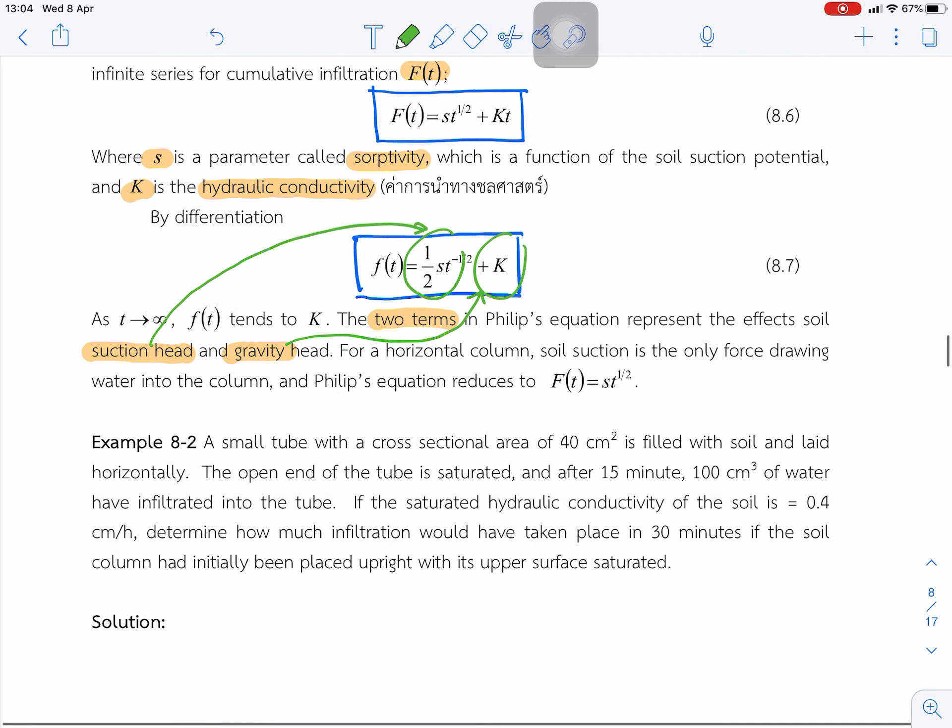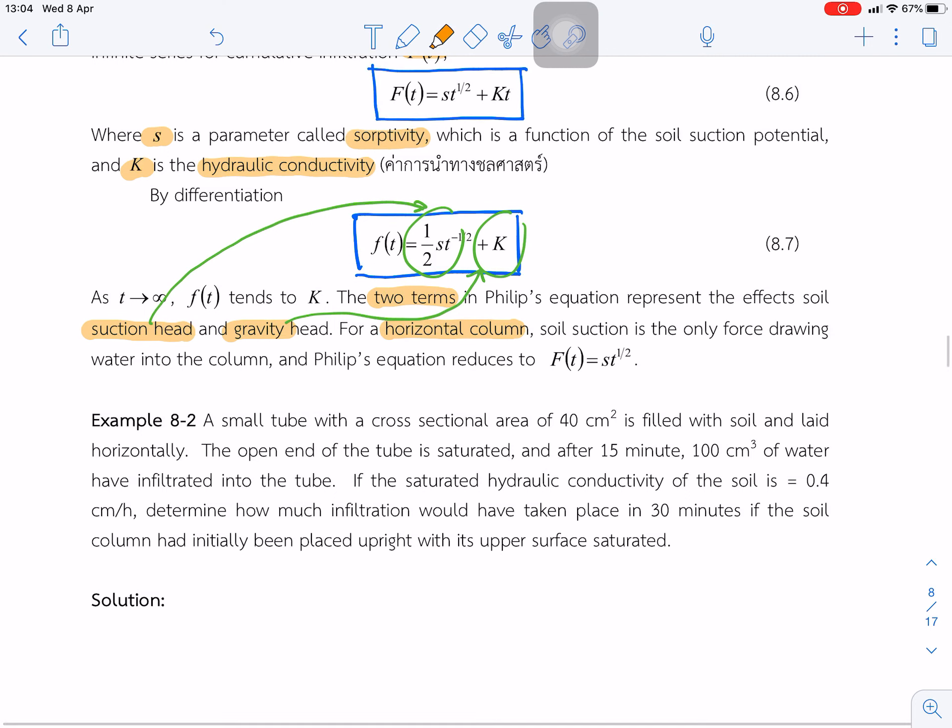So if we put the soil column in the horizontal column, the soil suction is only the force drawing water into the column, and Philip's equation reduces to just this equation for horizontal column.